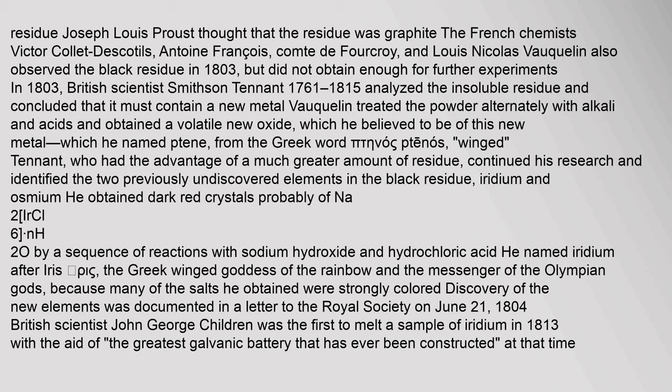Joseph Louis Proust thought that the residue was graphite. The French chemists Victor Collet-d'Escotilles, Antoine François Comte de Fourcroy, and Louis Nicolas Vauquelin also observed the black residue in 1803, but did not obtain enough for further experiments. In 1803, British scientist Smithson Tennant (1761–1815) analyzed the insoluble residue and concluded that it must contain a new metal. Vauquelin treated the powder alternately with alkali and acids and obtained a volatile new oxide, which he believed to be of this new metal, which he named Ptène, from the Greek word ptennos meaning winged. Tennant, who had the advantage of a much greater amount of residue, continued his research and identified the two previously undiscovered elements in the black residue: iridium and osmium.